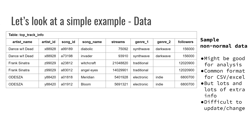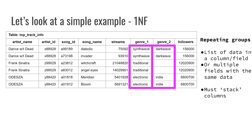We want to take this data and normalize it into a more flexible, reliable format. Jumping into the first normal form, the issue here is repeating groups. In this case, we have genre one and genre two — multiple fields containing the same type of information, just genres. This is problematic because if you wanted to add a third genre, you would need to add a whole new column for the whole database, which is really inefficient if only a few observations have a third classified genre. You also have blanks in genre two for Frank Sinatra, which creates open space that might not be totally necessary.